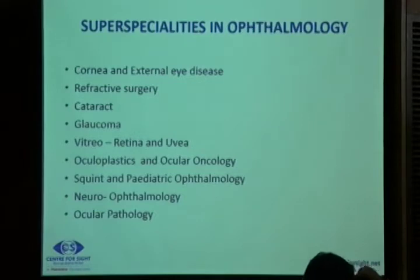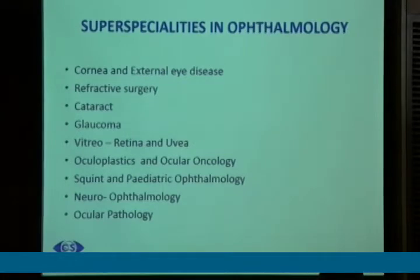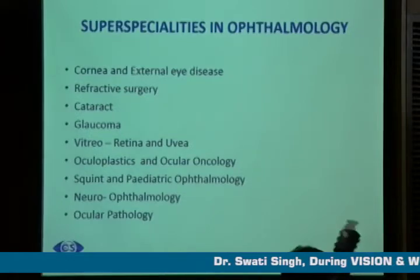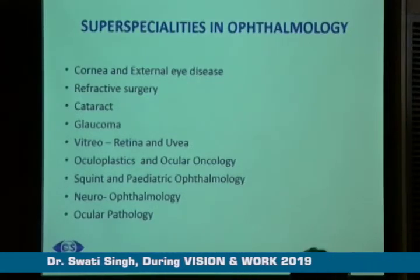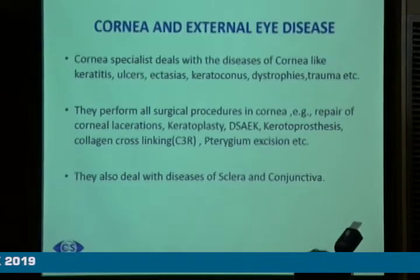So what are these super specialities in ophthalmology? They are: cornea and external eye disease, refractive surgery, cataract, glaucoma, vitreoretina and uvea, ocular plastics and ocular oncology, squint and pediatric ophthalmology, neuroophthalmology and ocular pathology. Here is a brief overview of all these super specialities.